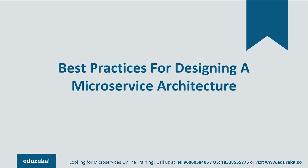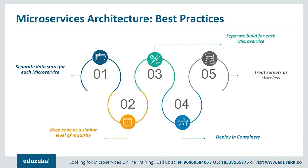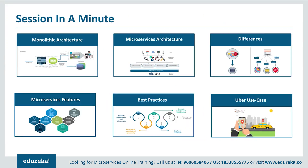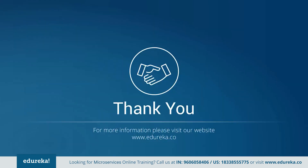Now for best practices to design microservices: separate the data store for each microservice; keep the code at a similar level of maturity; separately build each microservice according to its respective features and deploy into containers; and create servers as stateless for communication. To summarize, we covered monolithic architecture and its challenges, microservice architecture and the differences between both, features of microservices and best practices to design them, and compared Uber's previous monolithic framework to its current microservice architecture. Thank you for watching and have a great day.